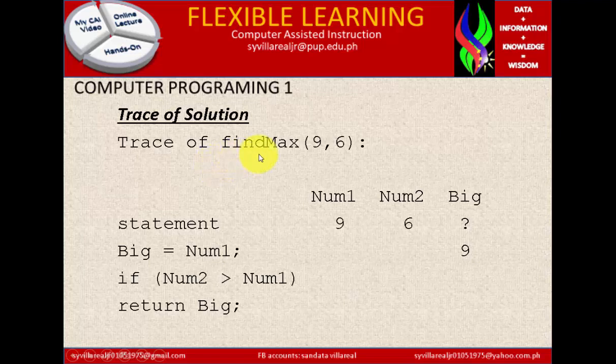Now trace for solution. Trace of findmax is 96. So num1 is 9, Num2 is 6. Then big is unknown. So this statement, big is equals to num1. So big is equals to 9. If num2 is greater than num1, it is not greater than return big. So big num1 is equal to 9. So it will return 9 as big num1.